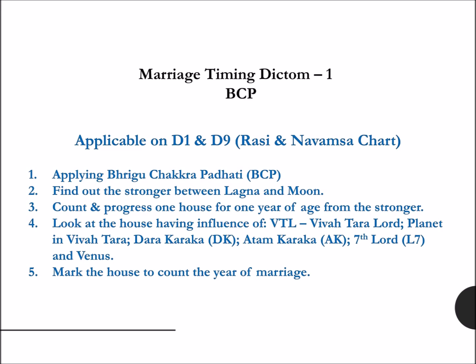First, the BCP known as Bhrigu Chakra Padrati. Thanks to dear Sunil John for elaborating this technique. In this principle, one Bhava or house is considered as one year of age. Twelve Bhavas or houses are equal to twelve years of age. To find the first house as the first year, we need to determine the strength of Lagna and the Moon in the chart. Once strength is confirmed, we can proceed counting the years from Lagna or the Moon as the case may be.